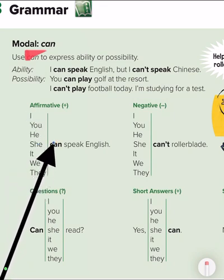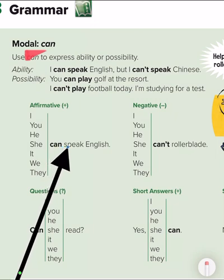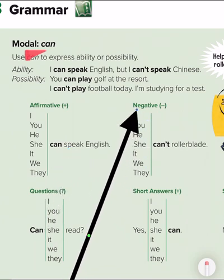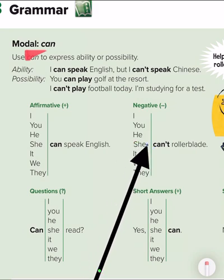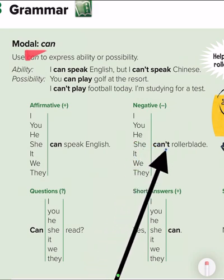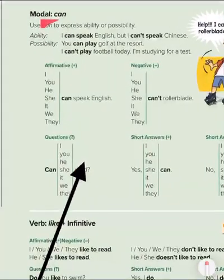All of that we can say can speak English. Use can. After can, the verb should be in the past form. No ed, no ing, no s. Just the past form. Negative. Look, what do we have here? Negative. I can't, you can't, she can't, it can't. We and they can't.